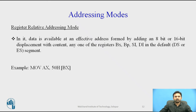The next addressing mode is register relative addressing mode, which moves a byte or word between a register and the memory location addressed by an index or base register plus a displacement value. The data in a segment of memory is addressed by adding the displacement to the contents of a base or index register. Data is available at an effective address formed by adding an 8-bit or 16-bit displacement with the content of any one of the registers BX, BP, SI, or DI in the default segment. For example, moving content from base register BX with a displacement value 50 to the AX register.